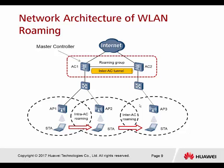Network architecture of WLAN Roaming. In this figure, there are two ACs — AC number one and AC number two — both already configured with an inter-AC tunnel. AC number one manages AP one and AP two, while AP number three is managed by AC two. When the PC roams from AP number one into the BSA of AP number two, this is called intra-AC Roaming, because both APs are managed by the same controller.